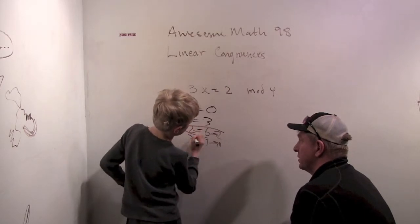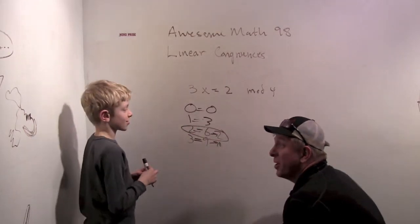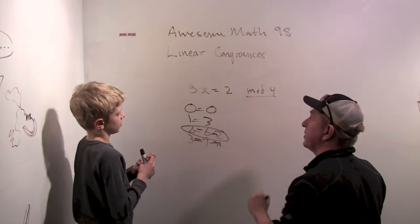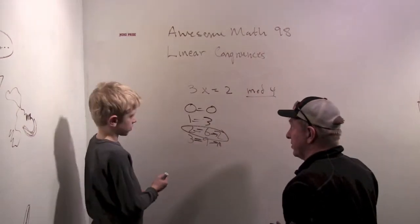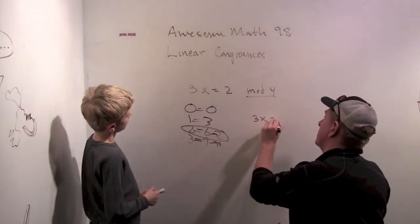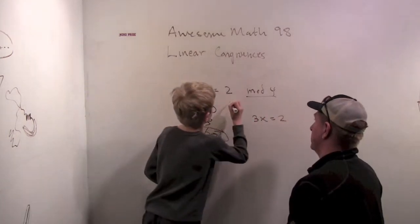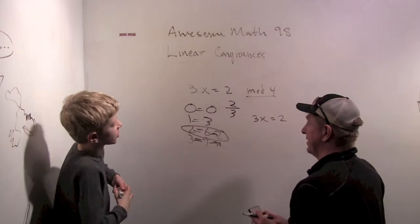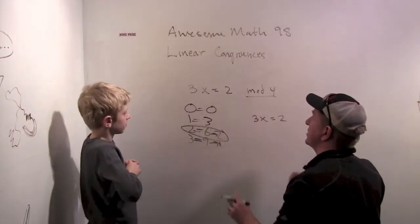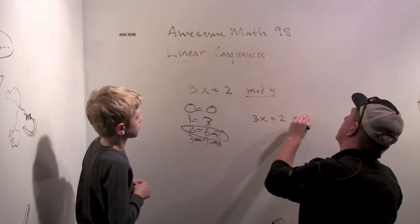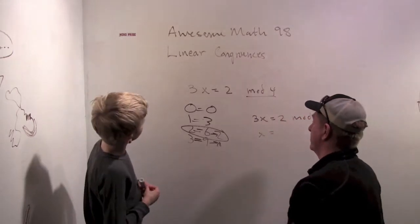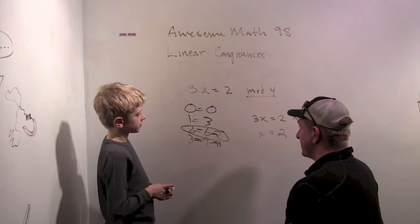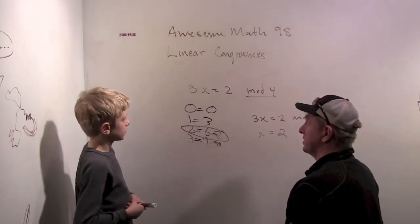So it looks like x is 2. That's pretty weird, right? Normally, if I gave you this problem without the mod 4 part — I just said find me a number such that when I multiply that number by 3 I get 2 — what would that number be? It would be 2 thirds. But in mod 4, there's actually a number for it. It looks like it's actually an integer. 3x equals 2 mod 4, x is 2. Huh, that's weird. So there are some really interesting things that come up in these linear congruences.